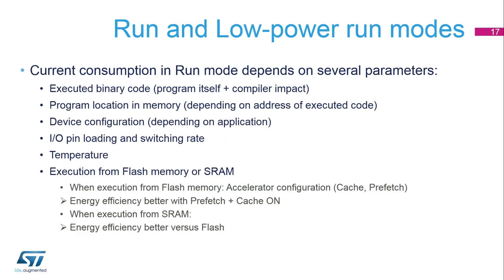The current consumption in run or low-power run modes depends on several parameters: the executed binary code (the program itself plus compiler impact), the program location in memory, the device software configuration, the I/O pin loading and switching rate, and the temperature. The consumption also depends on whether the code is executed from flash memory or from SRAM. Energy efficiency is better when the flash prefetch and instruction cache are enabled. Executing from flash consumes more than executing from SRAM, because flash memory belongs to the VDD power domain while SRAM belongs to the V-Core power domain.